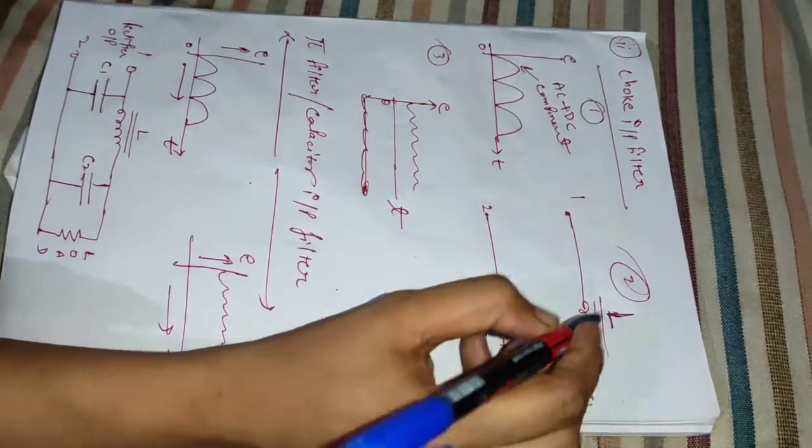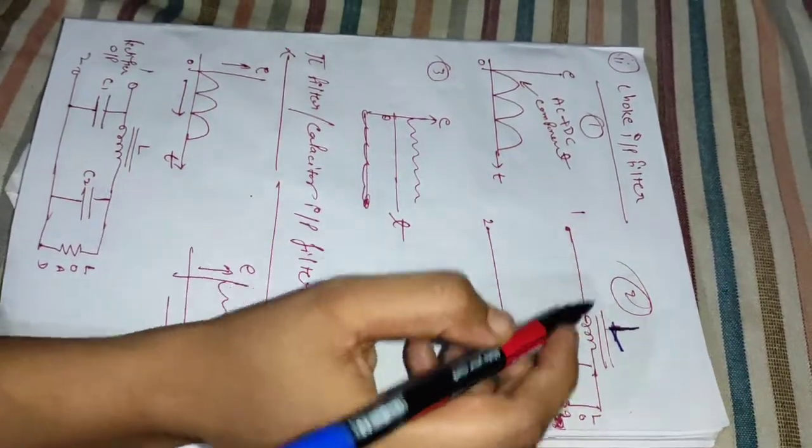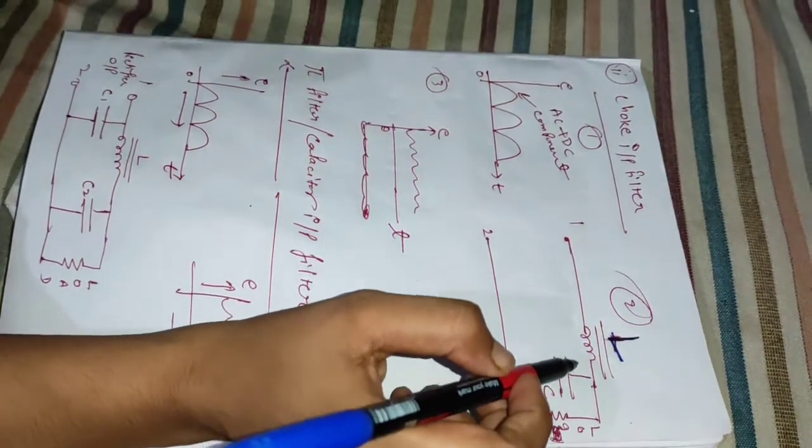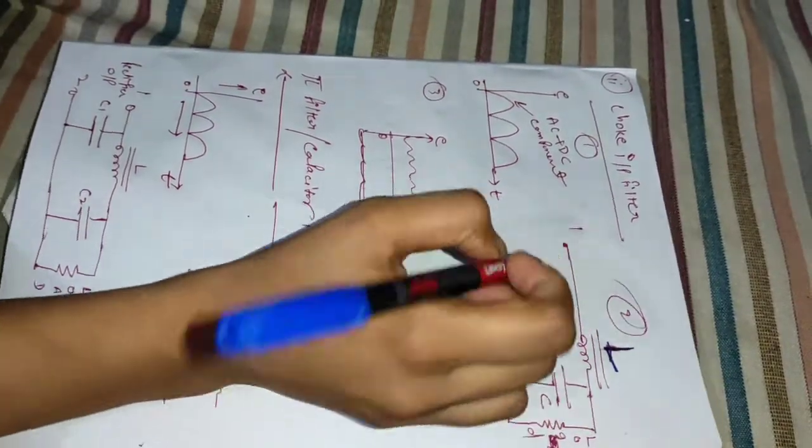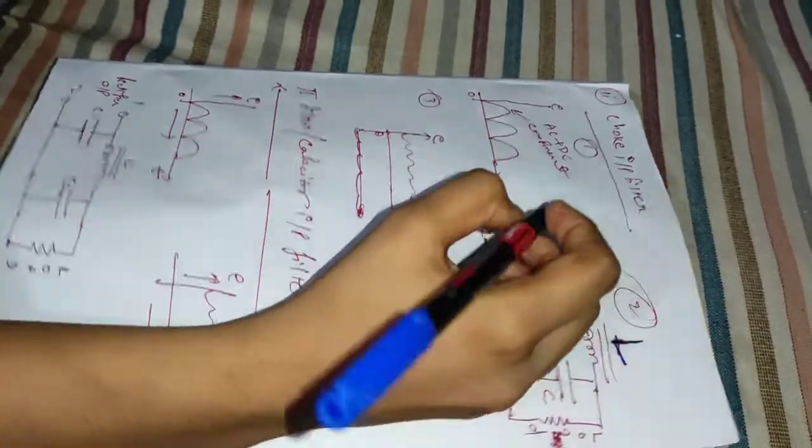It consists of a choke connected in series with the rectifier output. This is the rectifier output.